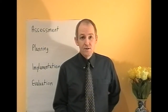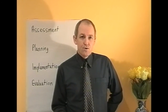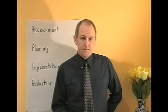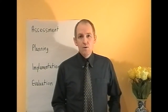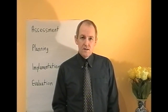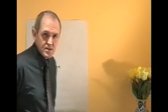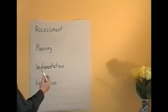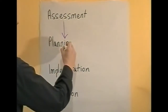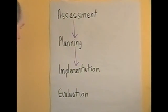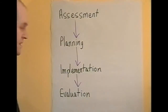Then, when we've planned what we're going to do, we do it — we intervene in some way. This is the intervention stage, or the implementation of the plan. After we've carried out the implementation, we evaluate how effective it was. Did this intervention work? Was it effective? So the stages are: we assess the problem, that leads on to planning, then to what we actually do, and then we evaluate whether that intervention was effective or not.